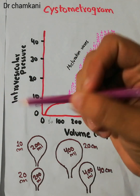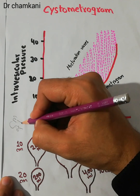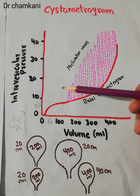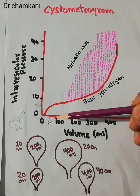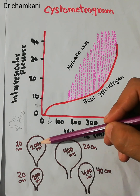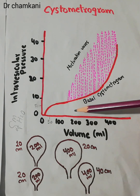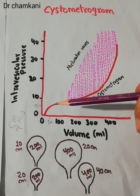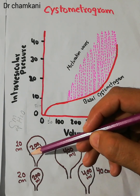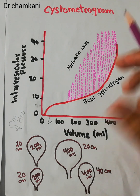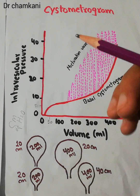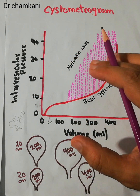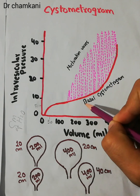The intravesicular pressure is measured in centimeters of water. At a volume of around 50 ml, the pressure is around 5 cm of water. Even with accumulation of around 100 to 200 ml of urine, there is only slight increase — even at 200 ml, the pressure has only risen to 10 cm of water. This initial increase in tone is basically the basal tone, due to the muscles present in the wall of the urinary bladder trying to contract.